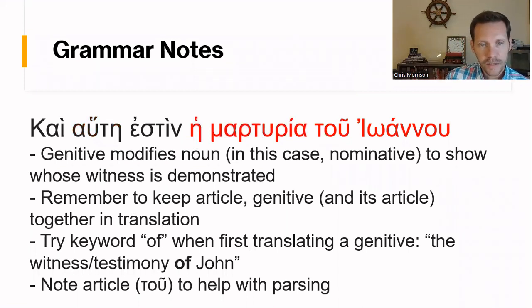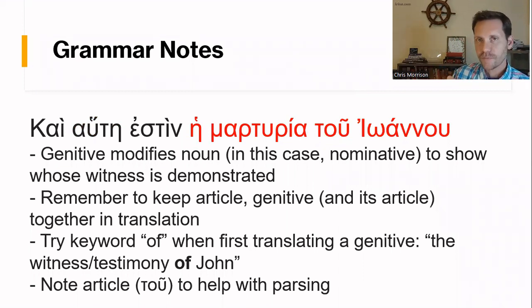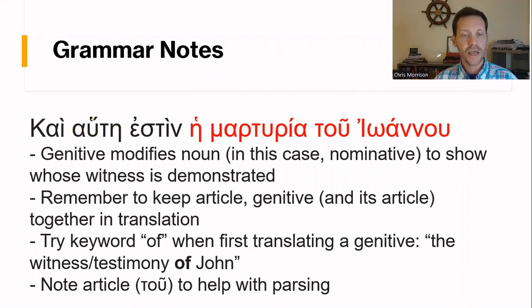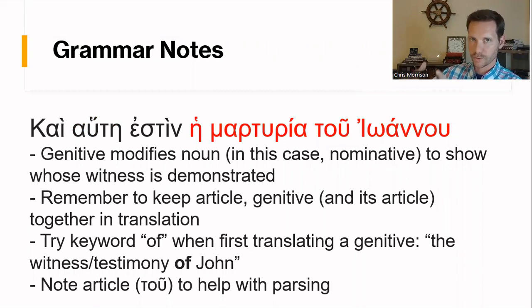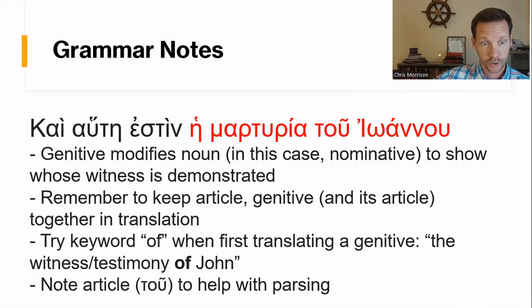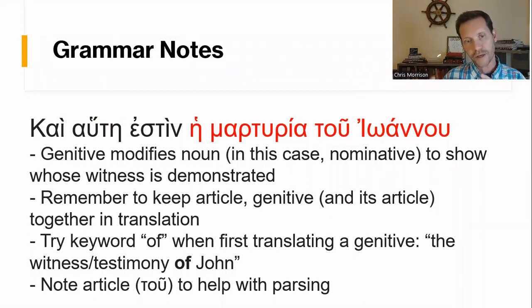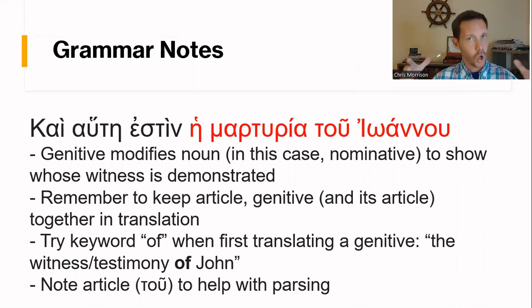Next, let's talk about hē marturia tou Iōannou. Tou Iōannou is in the genitive — you know that because of the omicron-upsilon ending. Anytime you have a genitive, it's always going to modify a noun. In this case the noun it modifies is hē marturia, the nominative. The genitive establishes a relationship between John and the witness: it's telling us who the testimony belongs to — it belongs to John. So you have hē marturia tou Iōannou: keep your article, your noun, your genitive article, and your genitive all together as a single phrase — 'the witness of John.'